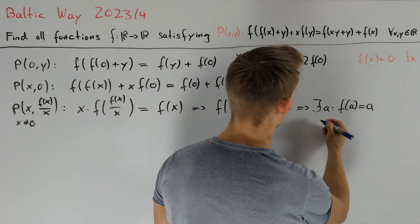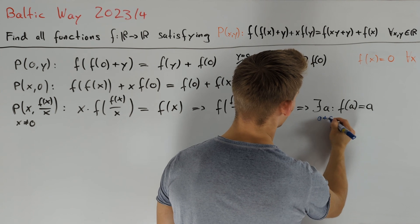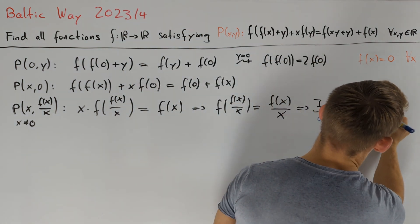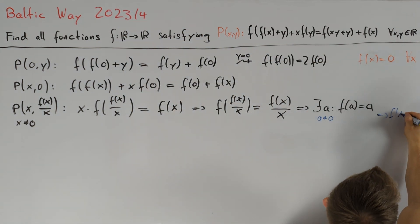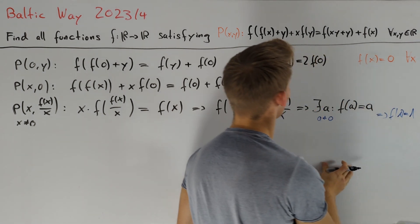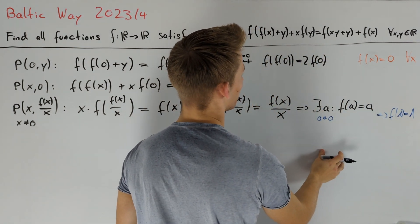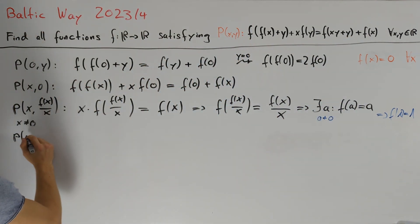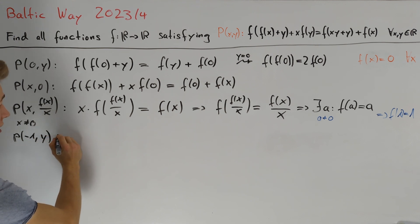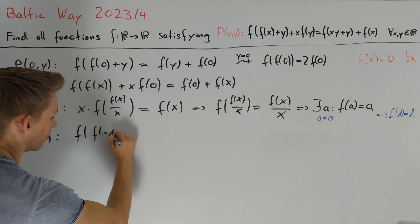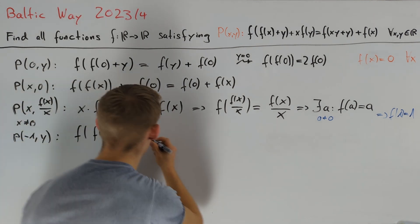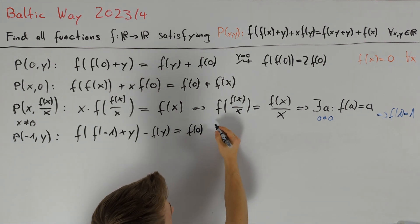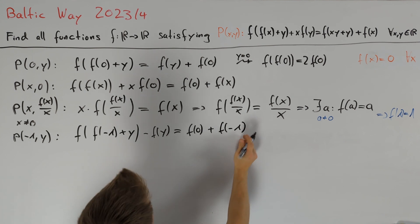Otherwise, we are allowed to choose a ≠ 0, and plugging x = a into the equation, we conclude that f(1) = 1. Another useful substitution is x = -1, because then one argument becomes 0. Plugging in x = -1 gives us: f(f(-1) + y) - f(y) = f(0) + f(-1).